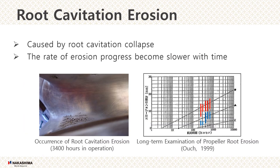Here is an example of root erosion. The figure on the left shows a root cavitation erosion condition after 3,400 hours in operation. Root erosion does not affect propeller performance significantly, and it has been reported that the rate of erosion progress becomes slower with time. However, ship owners sometimes regard erosion as a problem for safety, judging by its poor appearance. Accordingly, we need to suppress root erosion as much as possible.